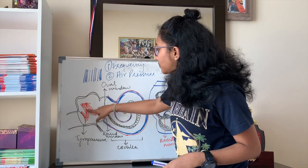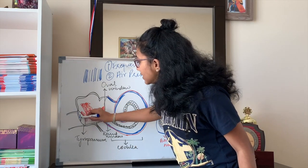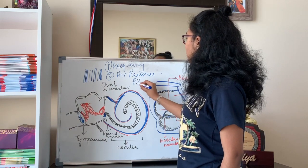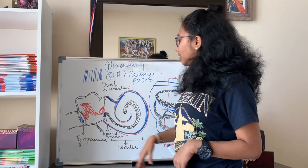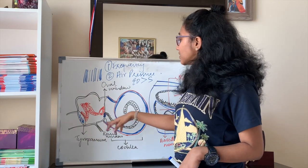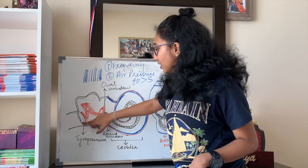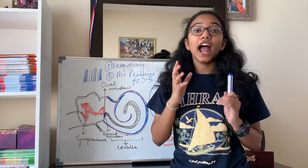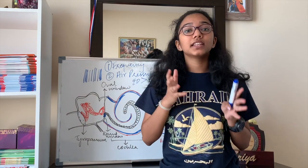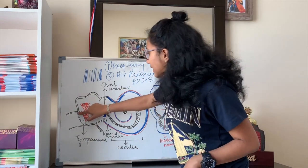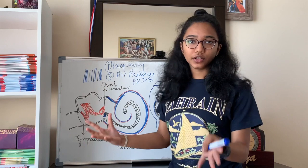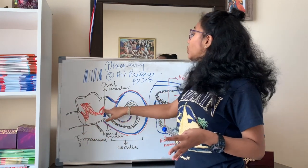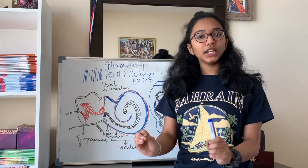The vibrations increase in amplitude because of the three ossicles. The area of the eardrum is greater than the area of the stapes. Applying Bernoulli's theorem, since the area of the eardrum is larger, the air pressure there is lesser than the air pressure at the stapes. Since air pressure determines loudness, the sound is amplified from the tympanum to the stapes. The sound is thus carried as vibrations from outside to the tympanum and then to the stapes.